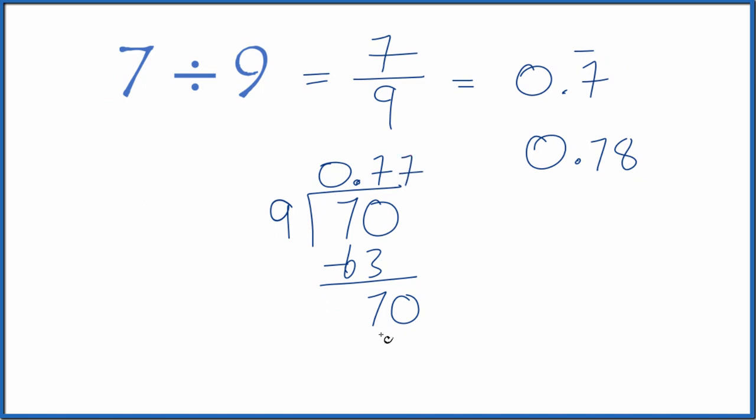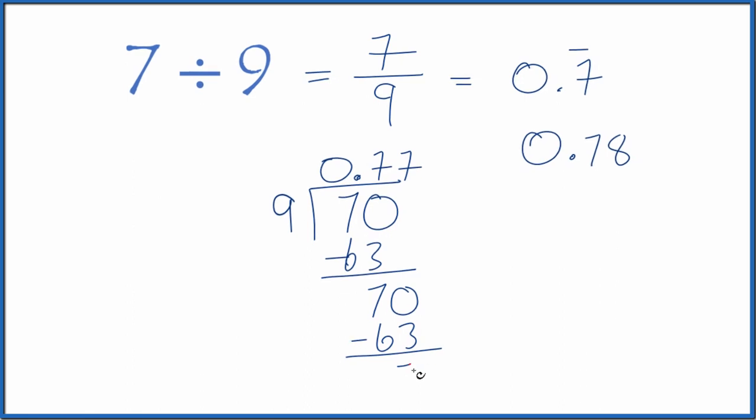7 times 9, 63. Subtract and we get 7. Call it 70, move over 1.